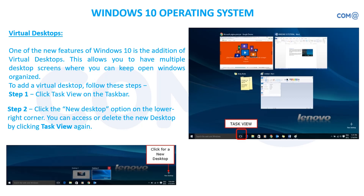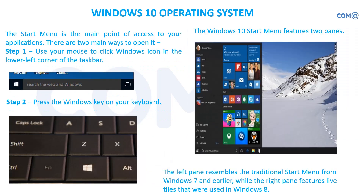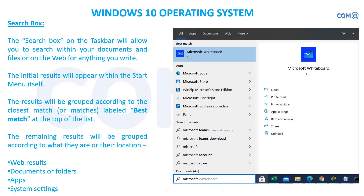The start menu is a new thing in Windows 10. It has a left pane and a right pane — the left pane looks like Windows 7 and the right pane looks like Windows 8, so Windows 10 combines both. The search box in the taskbar lets you directly type what you want without opening a separate search window, and it gives you the best possible options to choose from.